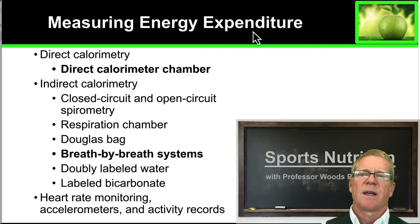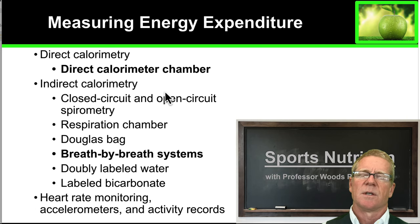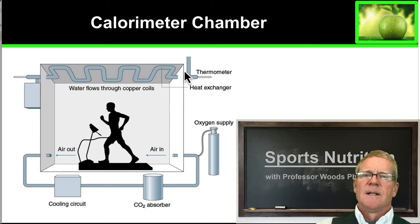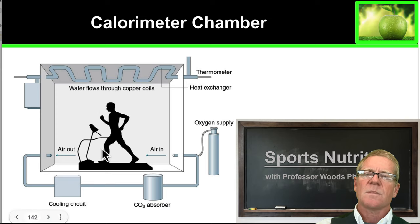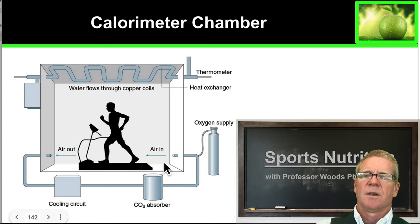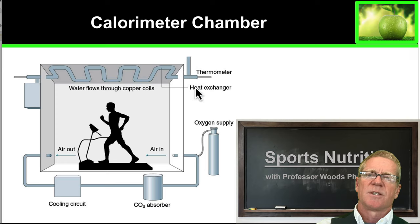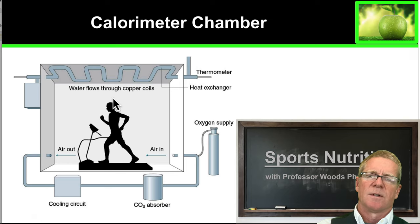We can make a couple of different measures of energy expenditure for athletes. Direct calorimetry requires a specialized chamber where we measure how much energy is being put out as heat. The athlete works out inside the calorimeter chamber while oxygen and carbon dioxide being supplied are measured. Copper pipes with a thermometer and heat exchanger measure changes in temperature, allowing us to estimate exactly how many calories the athlete is burning during different exercises.